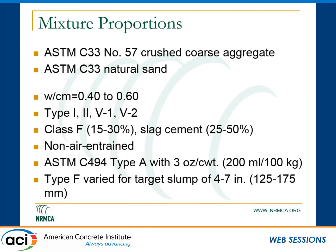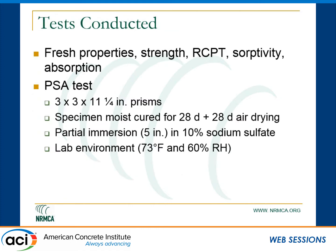Water-cement ratio varied from 0.4 to 0.6. Fly ash was varied from 15 to 30%, and slag cement between 25 and 50%. We used an ASTM Type A admixture at 3 ounces per hundredweight and varied the Type F admixture to get slump between 4 and 7 inches. We did all the fresh property testing, strength testing, column testing, rapid chloride permeability, sorptivity, and absorption. For the physical salt attack test, we followed what NIST was doing.